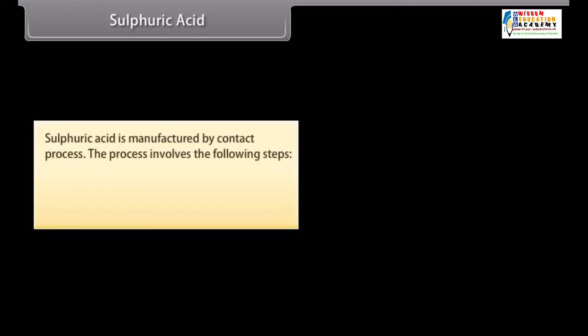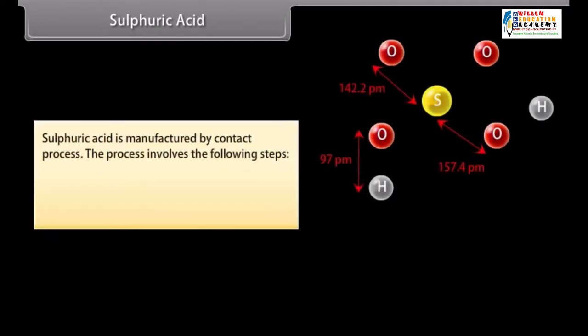Sulphuric Acid. It is the most important oxyacid of Sulphur. It occurs in certain minerals and springs. It has large application in industries and is also known as the king of chemicals. Sulphuric Acid is manufactured by contact process. The process involves the following steps.